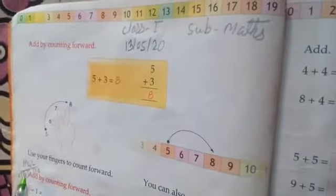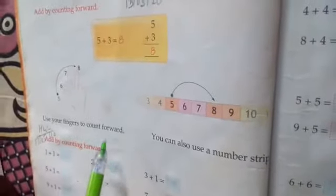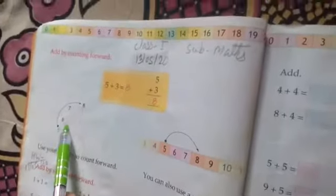First, use your fingers to count forward. Here, we count 3 fingers after 5.